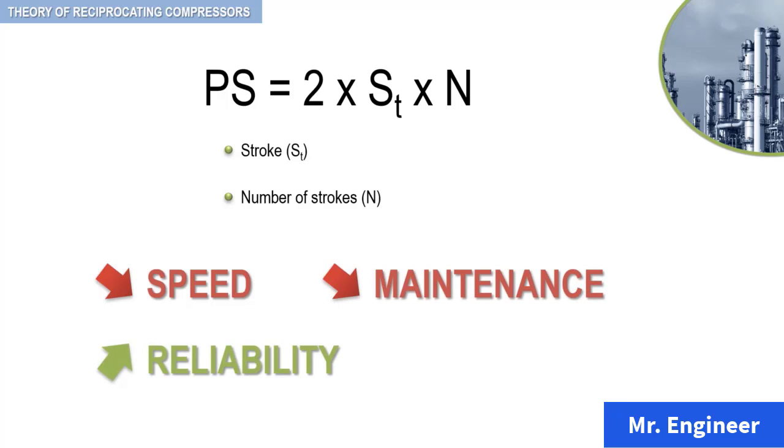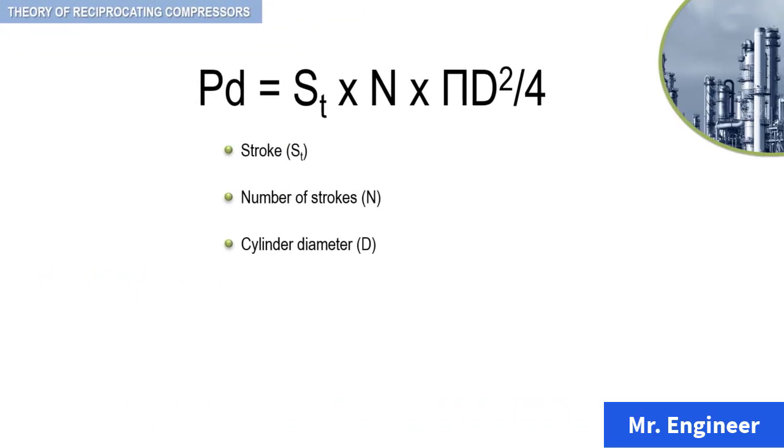The relationship given by the piston displacement, as seen in a previous video, which is reminded here, defines the size of the cylinder. Therefore, if the speed is reduced to lower the piston speed, then the diameter of the cylinder must increase to compensate for the lost displacement in order to maintain the same capacity.